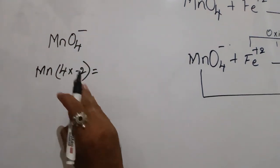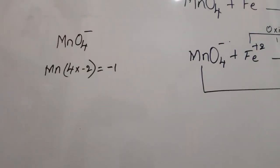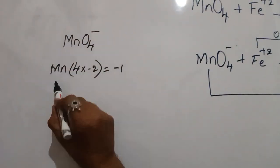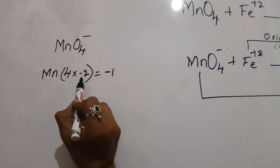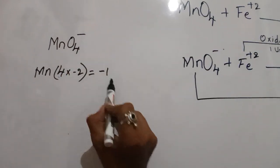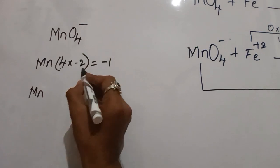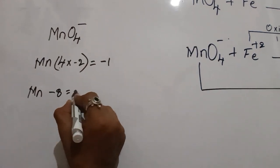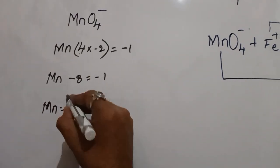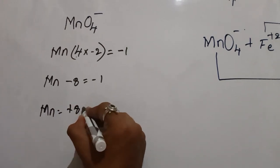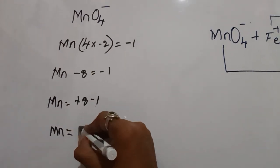So we write: Mn plus 4 times minus 2 equals minus 1. That gives Mn minus 8 equals minus 1. Therefore Mn equals minus 1 plus 8, which equals plus 7. The oxidation state of manganese in MnO4- is plus 7.